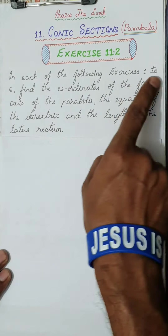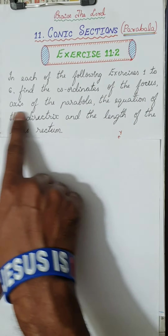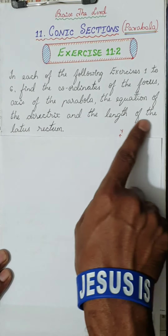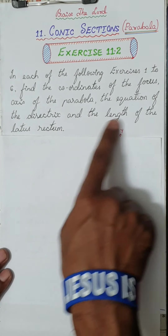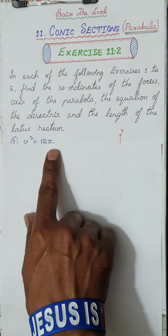In each of the following exercises 1 to 6, find the coordinates of the focus, axis of the parabola, equation of the directrix, and length of the latus rectum. These are the components or characteristics which you have to find out with the given equation of the parabola.